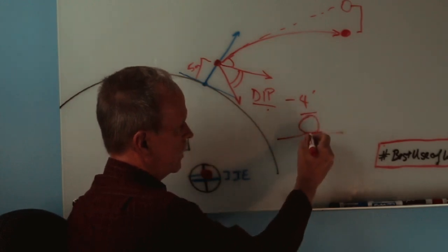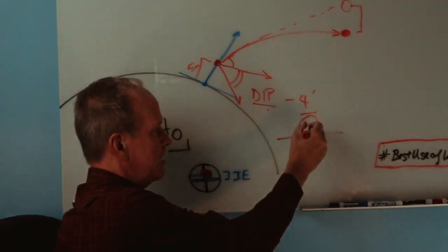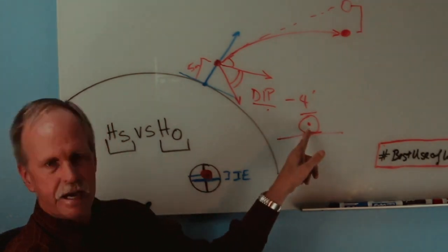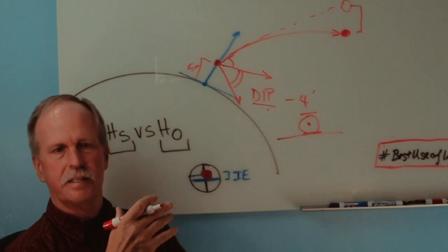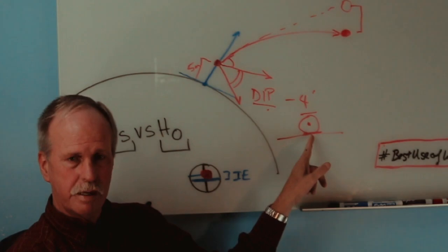So what we do is we measure to what they call the lower limb of the sun. What we want to know is where the center of the sun is. Now that distance that you have to correct is called a semi-diameter because it's half the diameter of the sun.